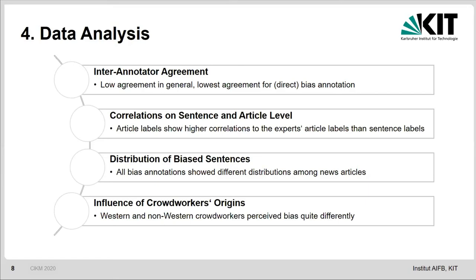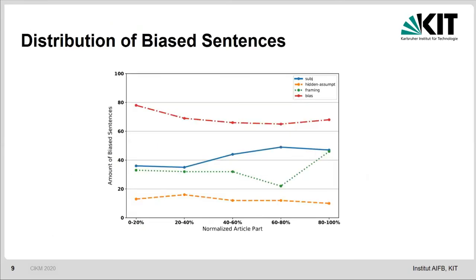Thirdly, we considered the distribution of bias across articles, which is quite interesting. Specifically, we looked at which parts of news articles contain sentences labeled as biased. The overall bias seems to be quite high at the beginning of the article. If we consider subjectivity, it is more recognizable at the end of the article. In a similar way, framing is rather detected at the very end. The hidden assumptions are at a quite stable level throughout.